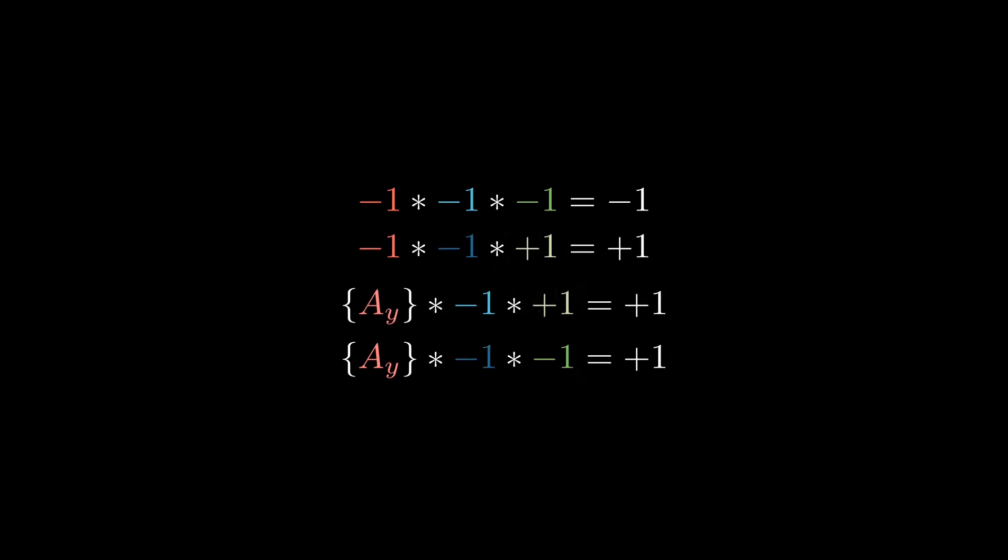And now, uh-oh, it looks like we've reached the contradiction where, according to equation three, AY has to be negative, but in equation four, AY has to be positive.